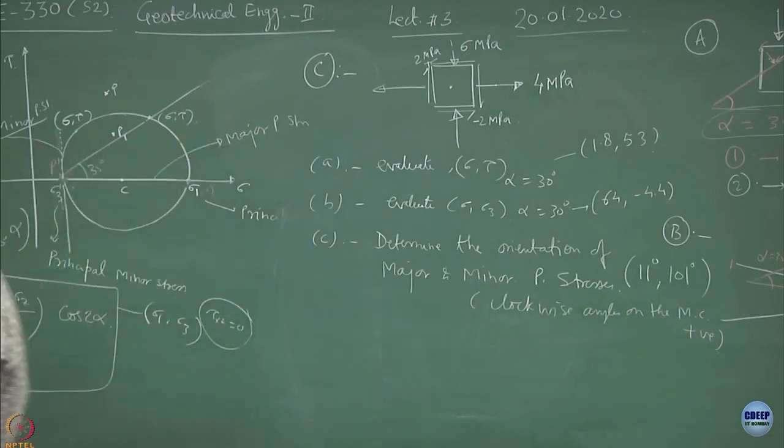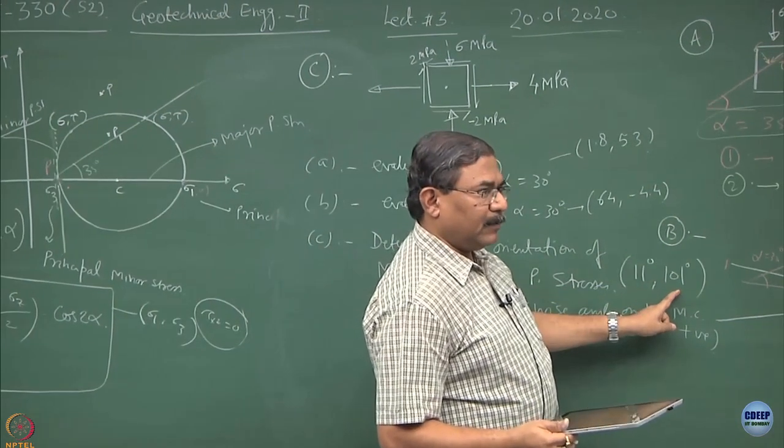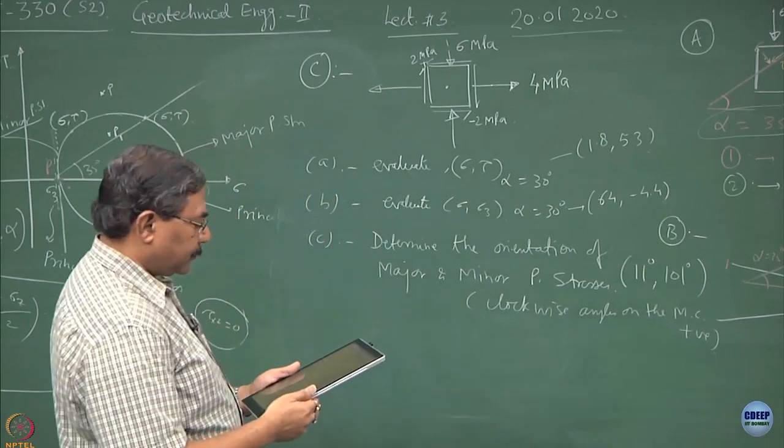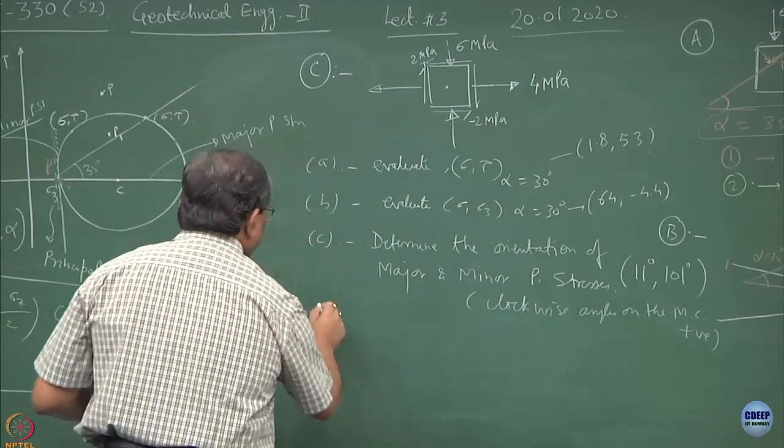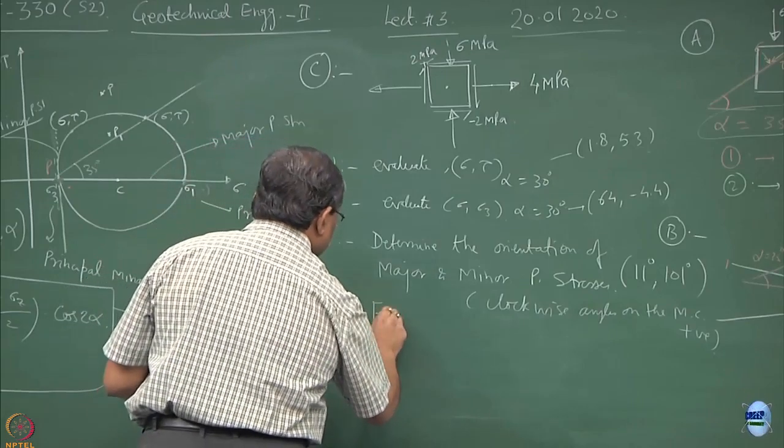I hope you will realize that the two planes are always inclined at 90 degree mutually. So 11 plus 90 would be 101, they are perpendicular planes - sigma 1, sigma 3.